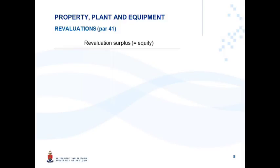This is your revaluation surplus T-account. It represents equity, accumulates in equity, and is presented as a column in the statement of changes in equity. You would have a surplus when an asset was revalued upwards, resulting in a credit entry in the revaluation surplus and a debit entry against the asset account.